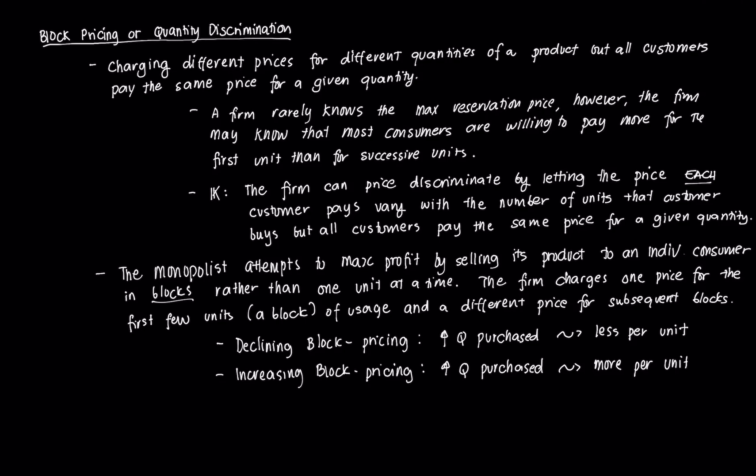Hi everyone and welcome to this video on block pricing or quantity discrimination, which is the second part of our lectures on second degree price discrimination. The first part revolved around two-part tariffs under both identical and non-identical consumer cases. Now we're going to quantity discrimination or more commonly known in economics as block pricing. It's essentially about charging different prices for different quantities of a product. But in this case all consumers will pay the same price for a certain set of quantities.